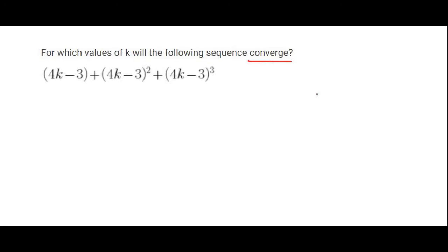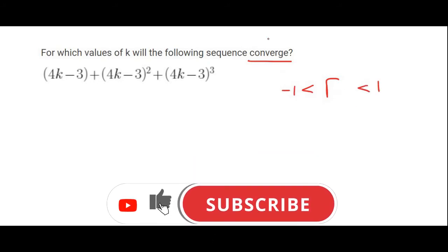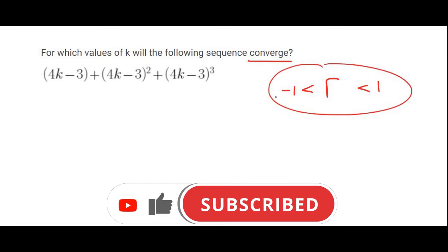Now, when a sequence converges, you should know that that is when the common ratio is between minus 1 and less than 1. So as soon as you see the word converge, you should automatically know this.